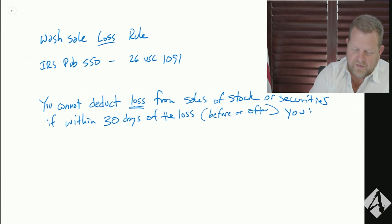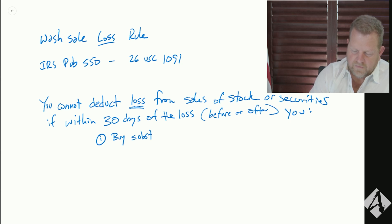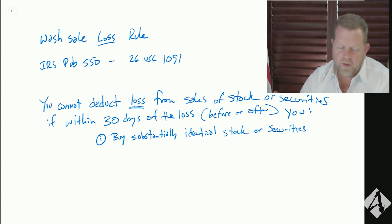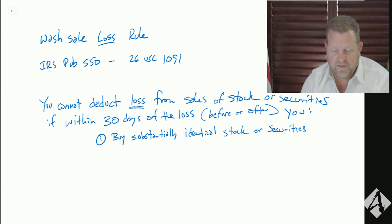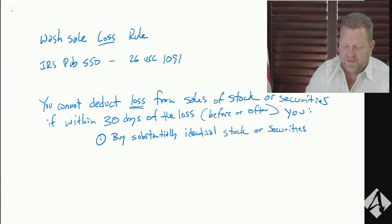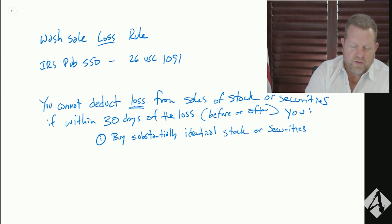Number one on the list: you buy substantially identical stock or securities. What that means is if I sell an ETF — let's say it's an energy ETF — and I sell it for a loss, and then I buy back either the same or a substantially similar ETF that has the same companies in it, maybe just a different fund provider, then I wouldn't be able to deduct the loss.